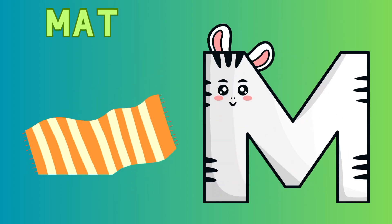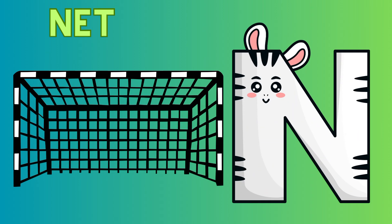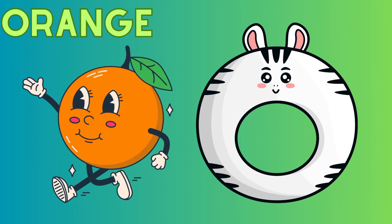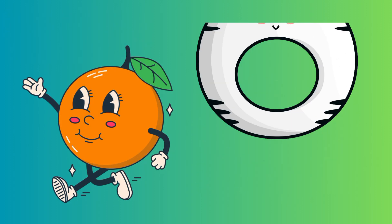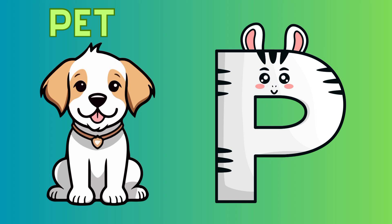M is for mat, m-m-mat. N is for net, n-n-net. O is for orange, o-o-orange. P is for pet, p-p-pet.